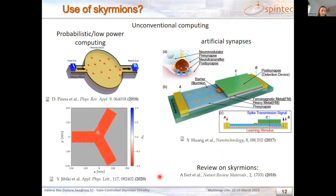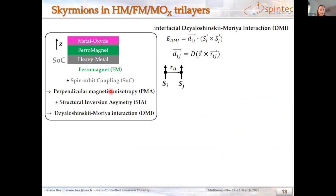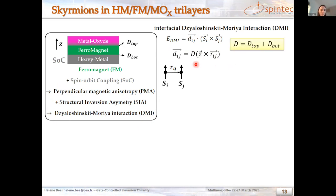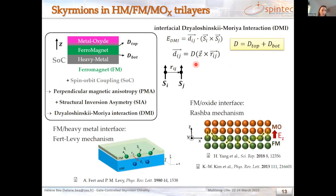I will now present our system. We use a ferromagnet sandwiched between a heavy metal and an oxide. The interfaces between the ferromagnet and the heavy metal, and with the metal oxide, provide perpendicular magnetic anisotropy, so the magnetization wants to be perpendicular to the plane. There is no inversion symmetry, and combined with spin-orbit coupling, this creates the DMI. The DMI coefficient D gives the strength of this interaction, and in our samples the DMI has an interfacial origin coming from the two interfaces.